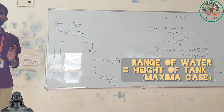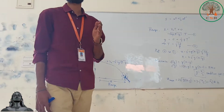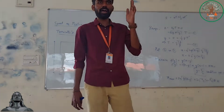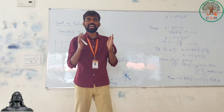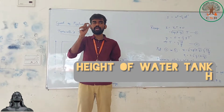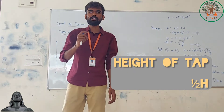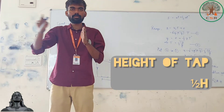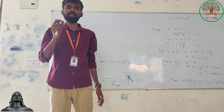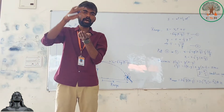This is one of the first concepts from fluid mechanics. If we have a water tank of height h, then the place where the hole — the tap — should be made to get the maximum range of water coming out is y equal to h by 2, meaning the tap should be at the mid-height of the tank.